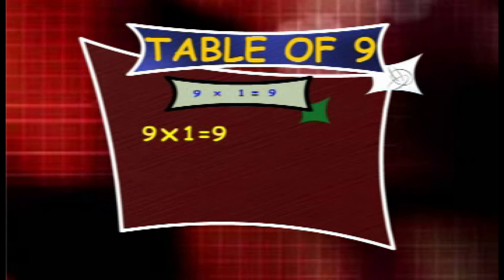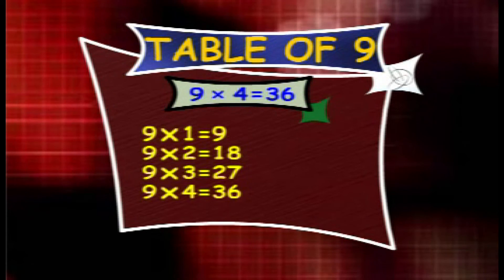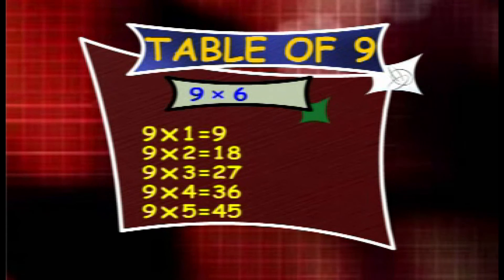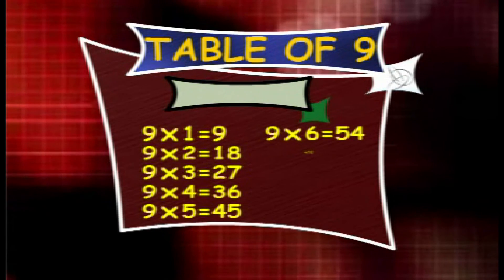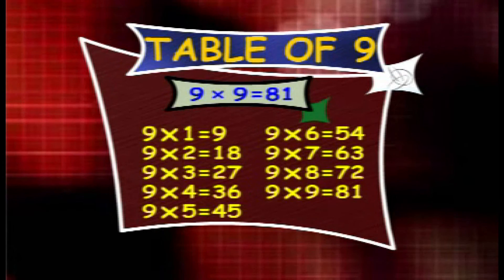Table of 9. 9 1s are 9, 9 2s are 18, 9 3s are 27, 9 4s are 36, 9 5s are 45, 9 6s are 54, 9 7s are 63, 9 8s are 72, 9 9s are 81, 9 10s are 90.